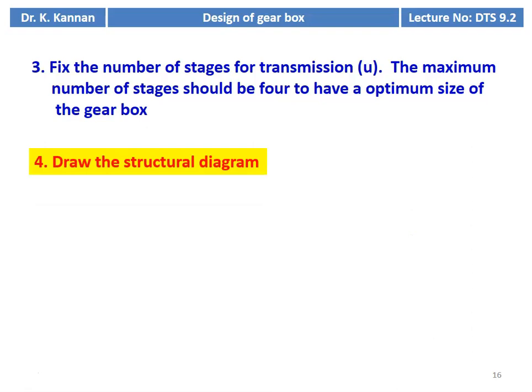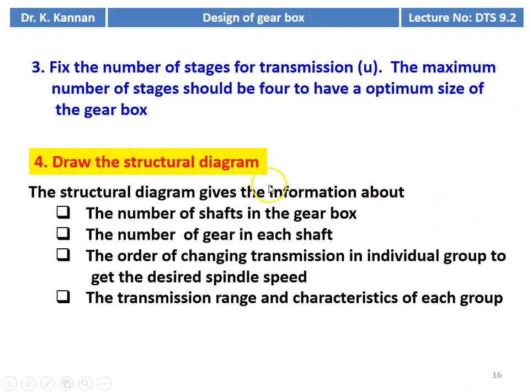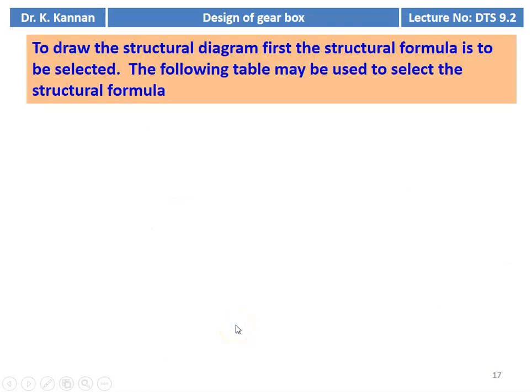We have to draw the structural diagram. There are three different diagrams to draw in the gearbox design. The structural diagram gives information about the number of shafts in the gearbox, number of gears on each shaft, the order of changing transmission in each group to get the desired spindle speed, and the transmission range and characteristics in each group. To draw the structural diagram, first a structural formula must be selected.